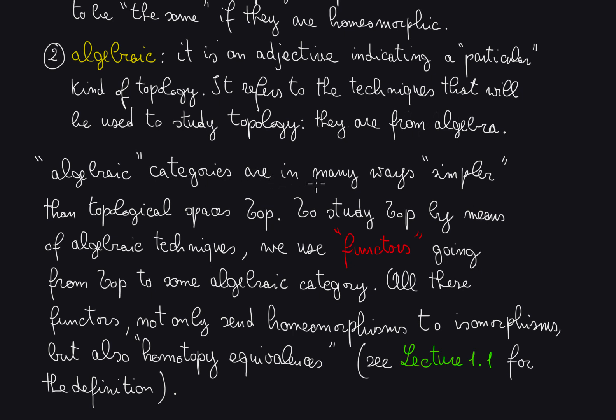Algebraic categories are in many ways simpler than topological spaces, whose category is usually denoted by top. To study top, which is a very complicated category, by means of algebraic techniques, we use functors.